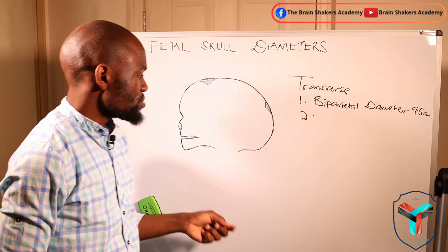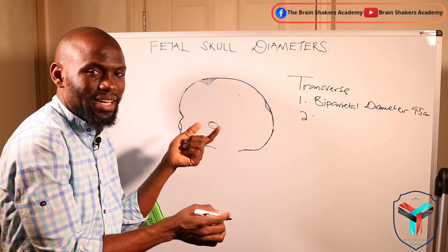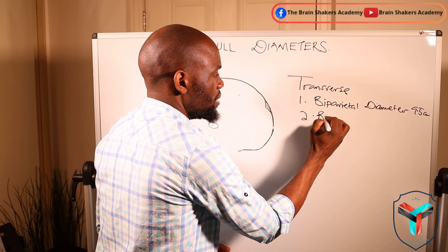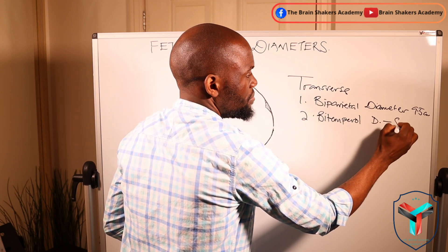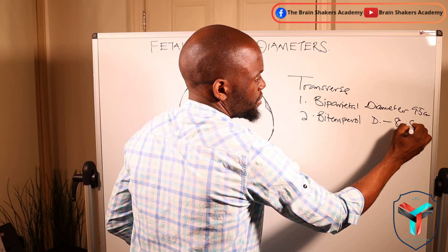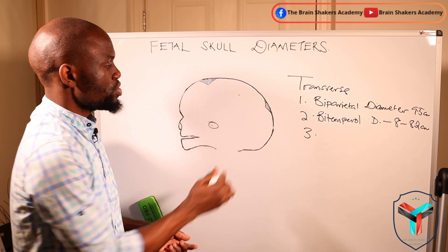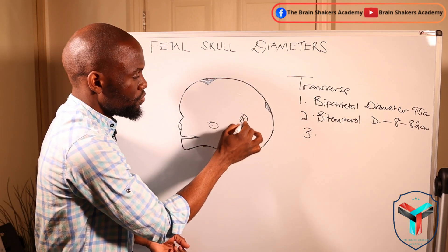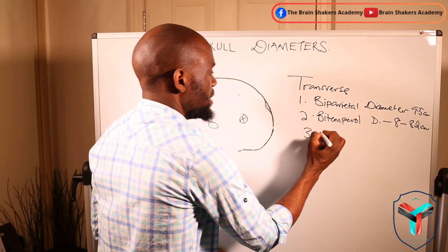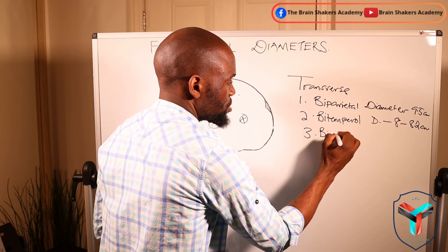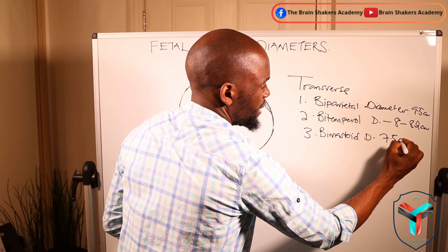From the bi-parietal diameter, you also have a diameter that you can measure from one temporal bone to another temporal bone on the other side, and that is referred to as the bi-temporal diameter. This one measures something between 8 to about 8.2 centimeters. Then you also have a third type of diameter which you can measure from just behind the ear from one mastoid bone to another mastoid bone, and you can call it the bi-mastoid diameter, which measures about 7.5 centimeters.